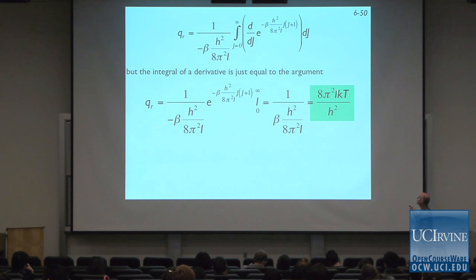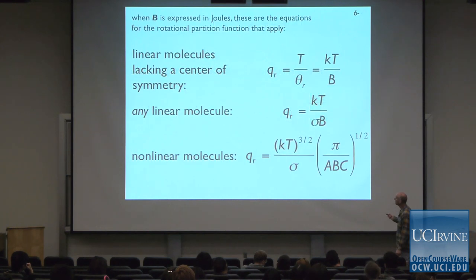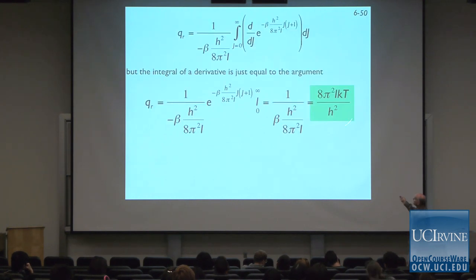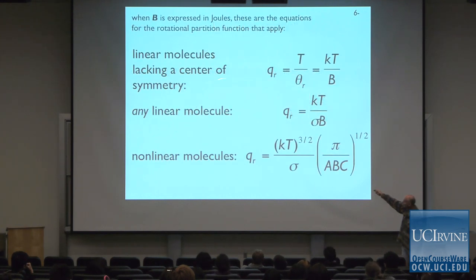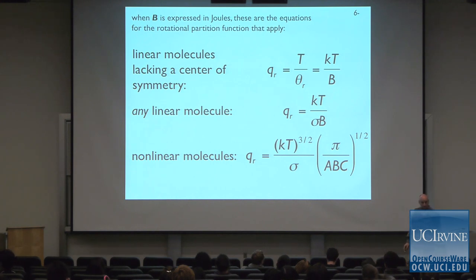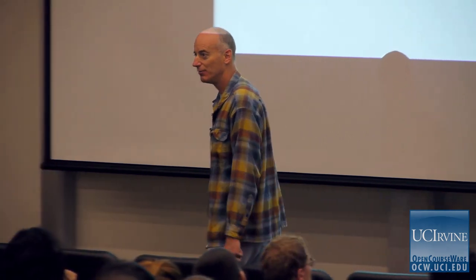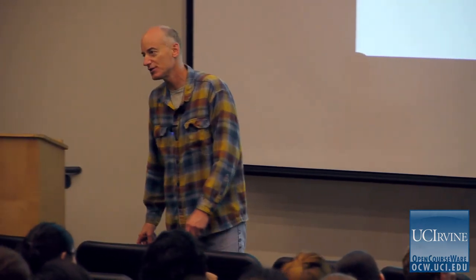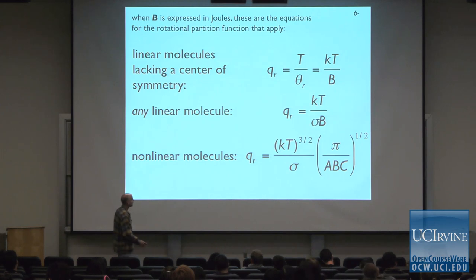At the end of the day, the one-dimensional rotational partition function is: Q_rot = √(π² I kT / ħ²). We have to customize this expression for molecules of different shapes — three versions: a linear molecule lacking a center of symmetry, any linear molecule, and non-linear molecules with rotational constants A, B, C about the three major axes. You'll never have to memorize these equations; they'll always be available in your book or on the exam. But we have to be able to use them to calculate partition functions.